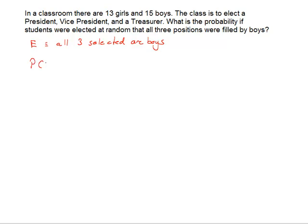So, to calculate the probability of E, we just simply need to count how many ways E can occur over the number of ways possible, the number of ways that we can simply select three students from the entire class to be president, vice president, or treasurer.